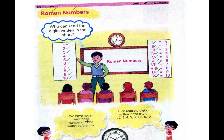We have never read this number on the watch before. Before we read these numbers, we can't read the Roman Numbers. Now we have learned these numbers, and we can easily explain them. We have X — what was X? X was 10.